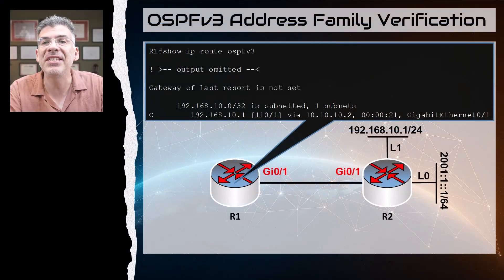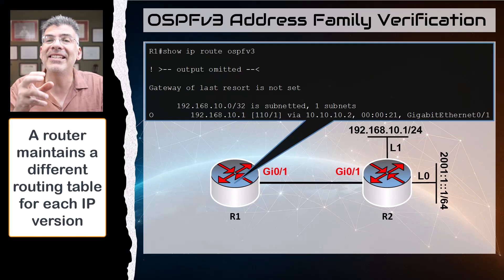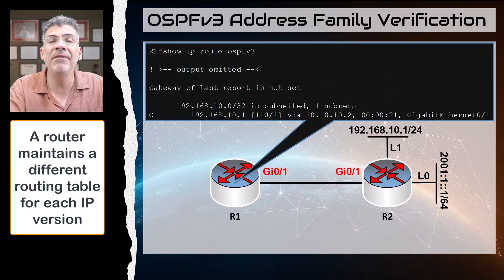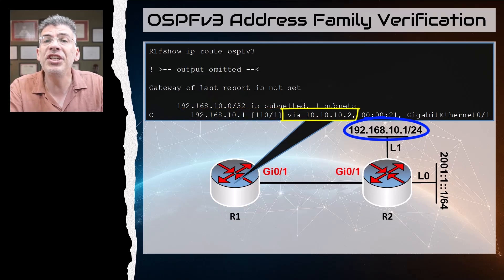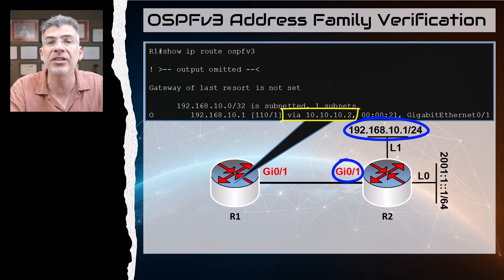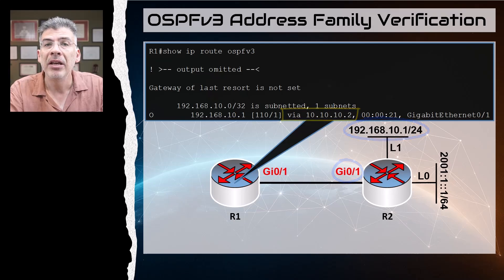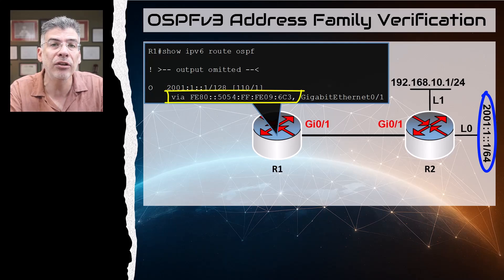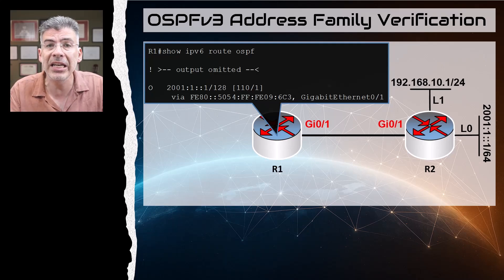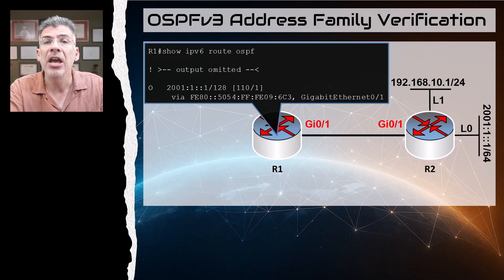Now let's look at our IPv4 and IPv6 routing tables on R1. Even though we're using a single instance of OSPF version 3, the router still maintains separate routing tables for each address family. In our IPv4 routing table, the network was learned with a next-hop IP address of 10.10.10.2, which is the IPv4 address assigned to the GigabitEthernet 0/1 interface of R2. In our IPv6 routing table, R1 has an IPv6 route to R2's network with the next hop being the IPv6 link-local address of R2's GigabitEthernet 0/1 interface. We've successfully used OSPF version 3 to advertise both IPv4 and IPv6 routes using the address families feature.